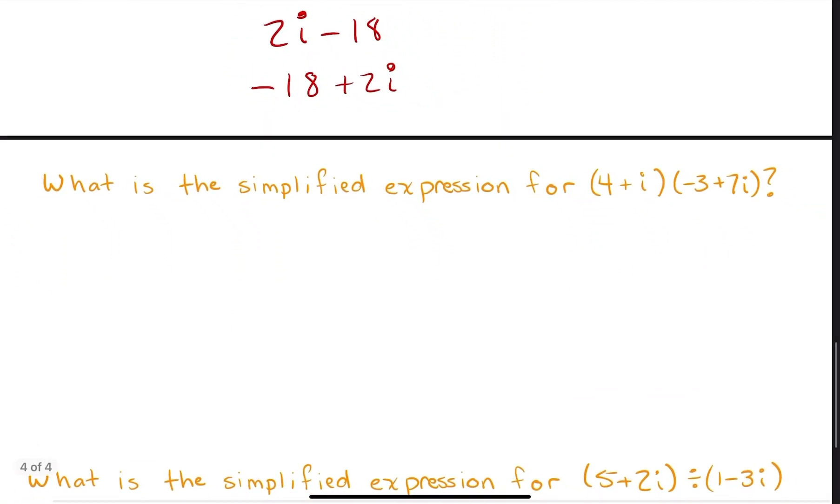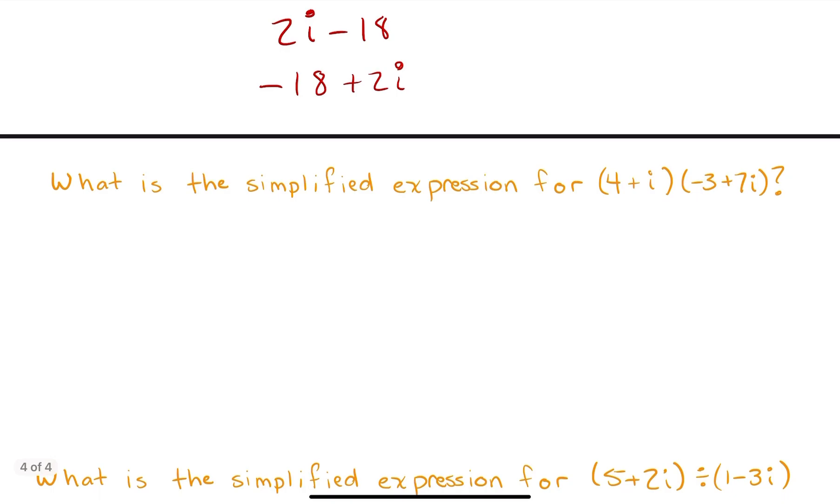It says, what is the simplified expression for 4 plus i times quantity negative 3 plus 7i? Okay, so these are two binomials being multiplied together. And just because they're complex numbers also doesn't change the fact that we're just going to use normal real number algebra here. So I'm going to use the FOIL method here. And the way that I do the FOIL method personally is I'll take the first numbers first. 4 times negative 3. That'll give me negative 12.